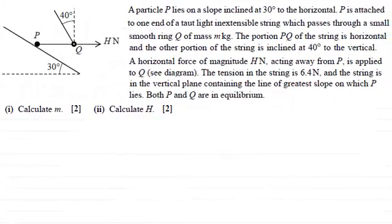Hi. Now in this question, what we've got here is a particle P on a slope inclined at 30 degrees to the horizontal. P is attached to one end of a taut, light, inextensible string which passes through a small,